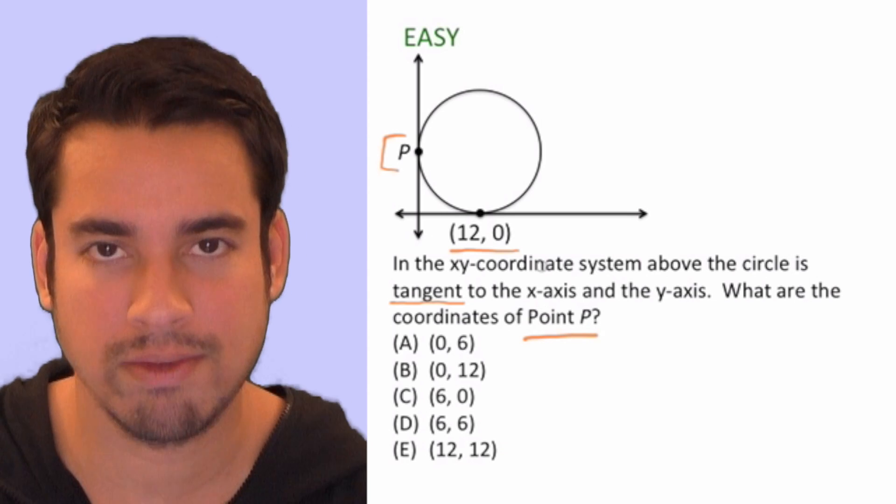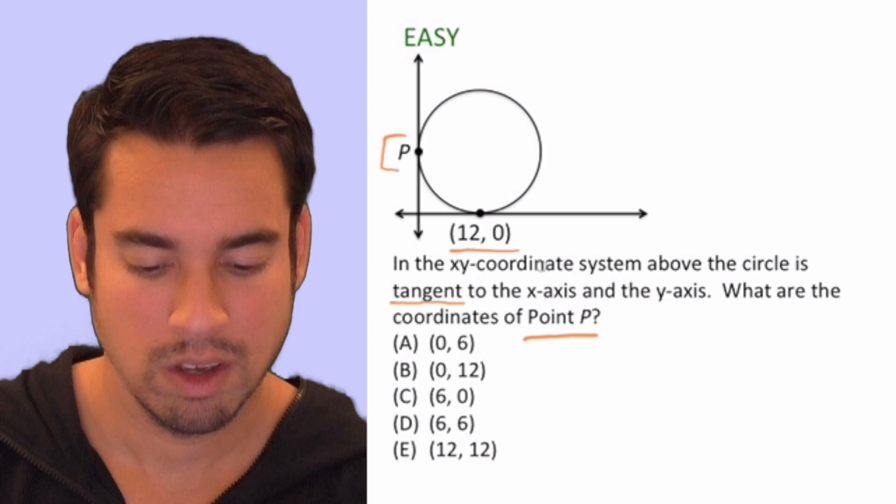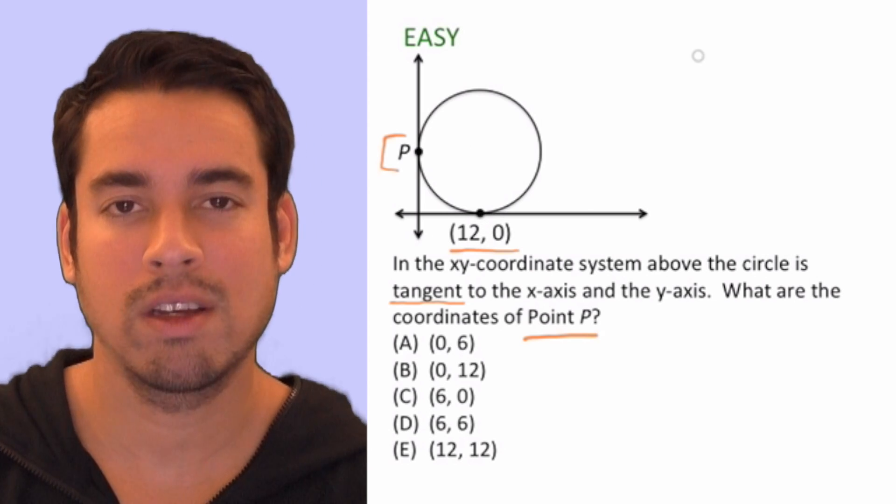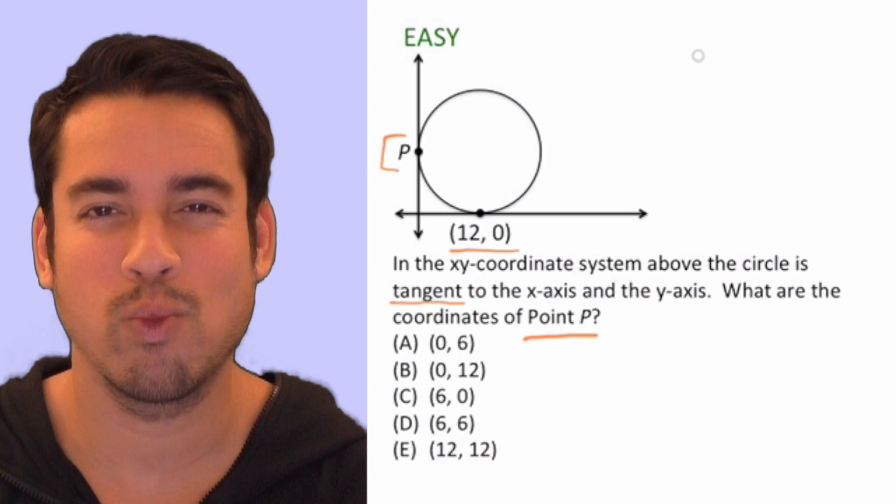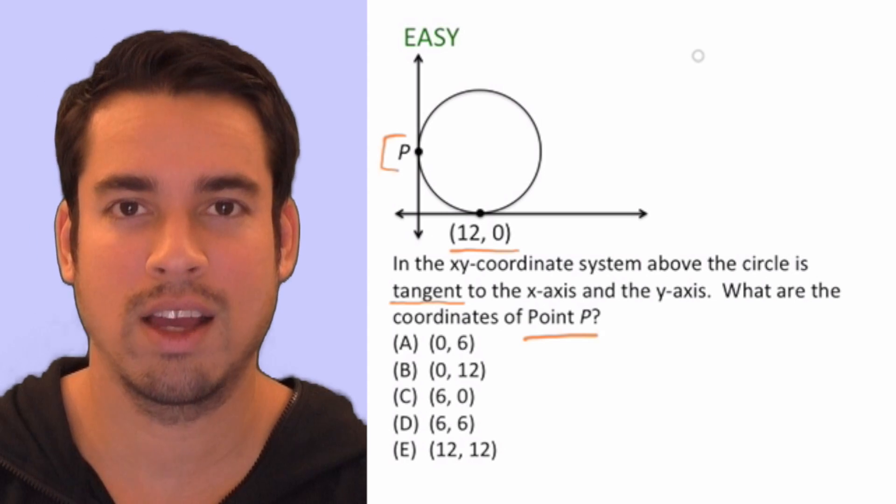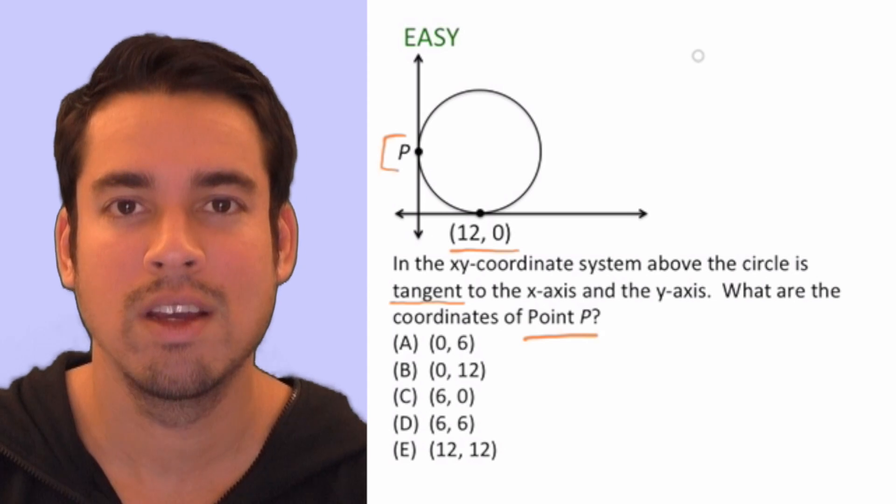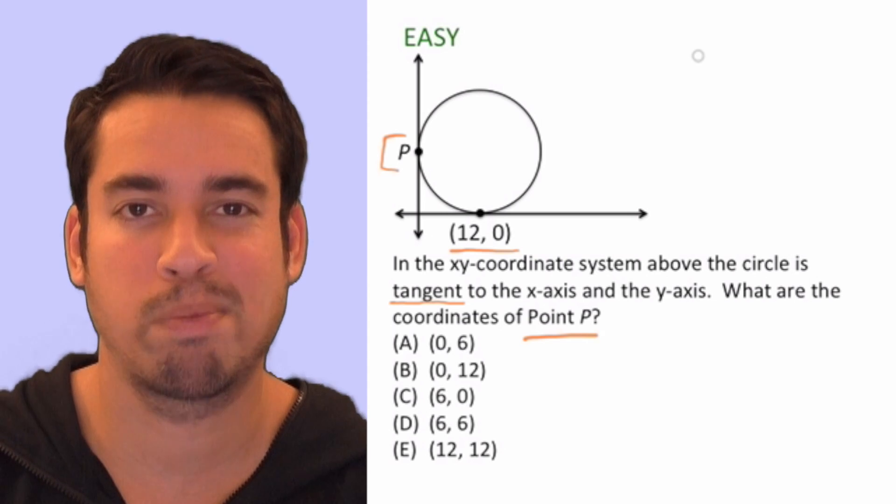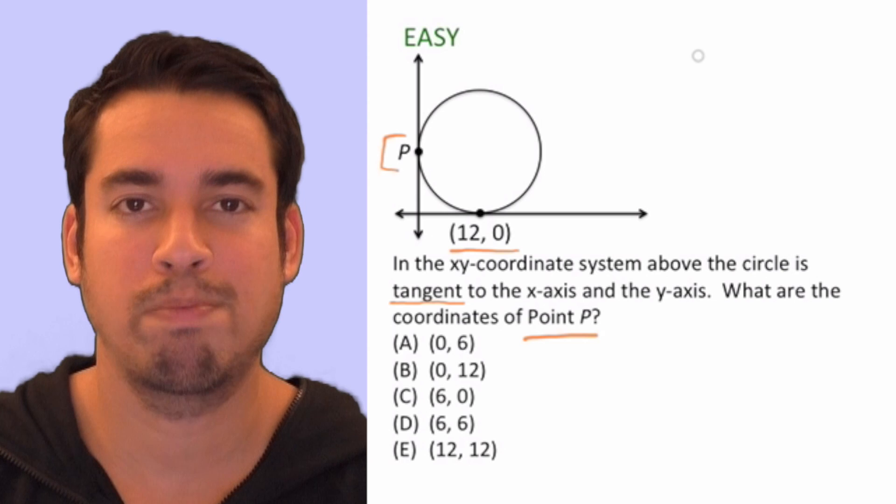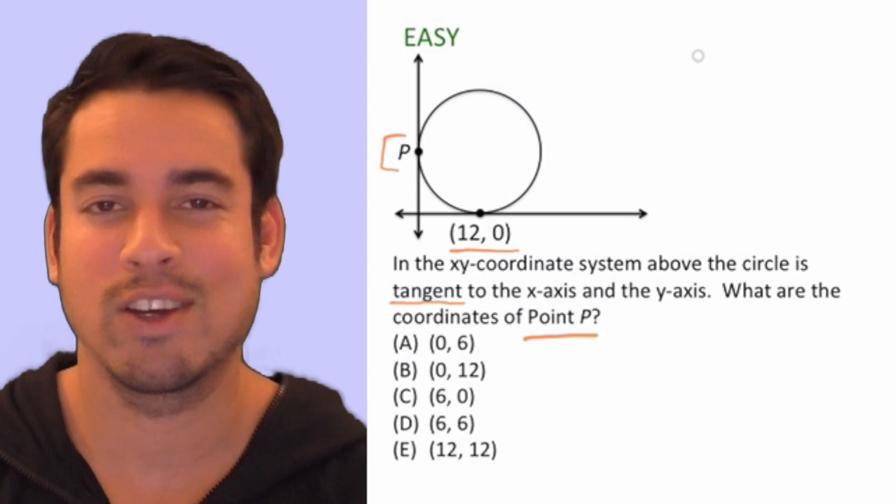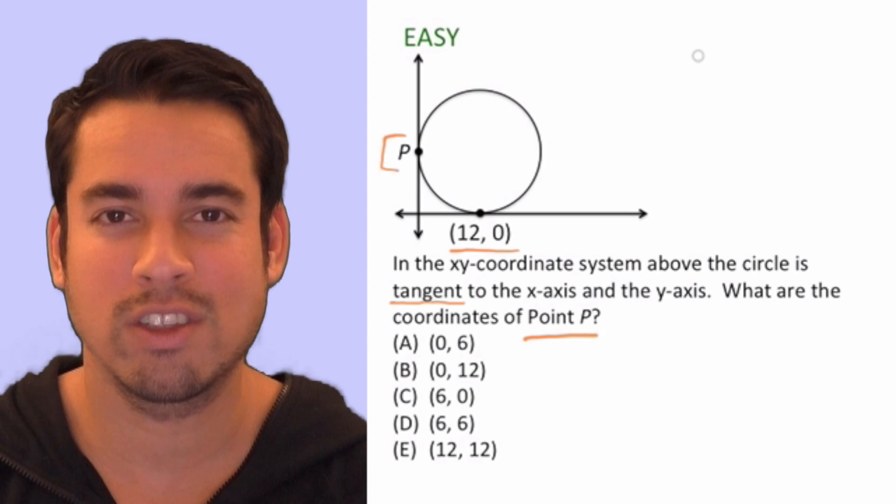So first of all, what does tangent mean? Tangent means basically when one point is touching the line—that's what tangent means. It also technically means if something is tangent to a circle, it's parallel to it at that particular point. So it's not going through the circle or intersecting it, it's just touching the very outer edge.